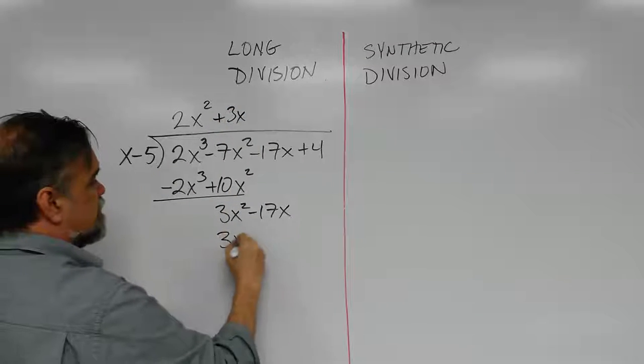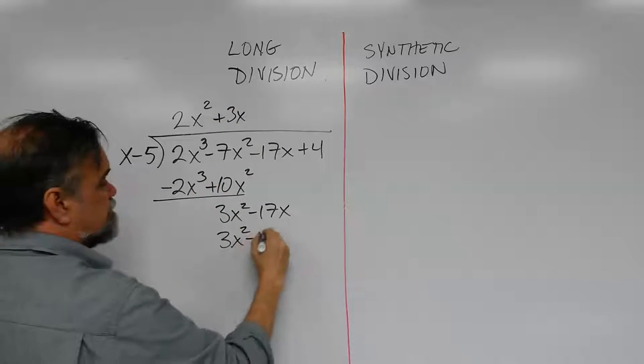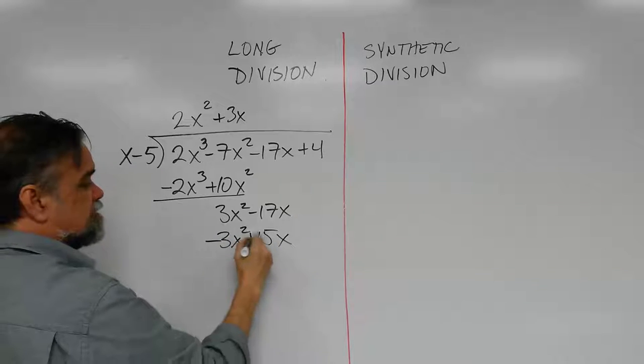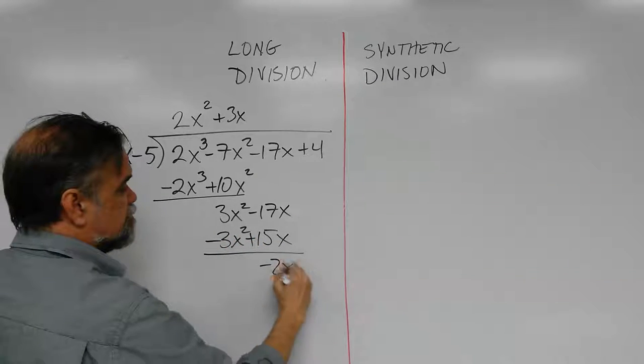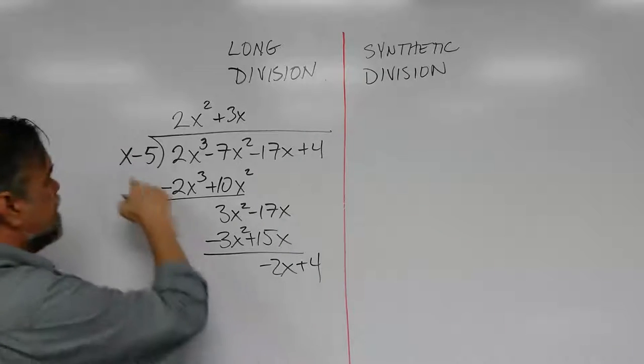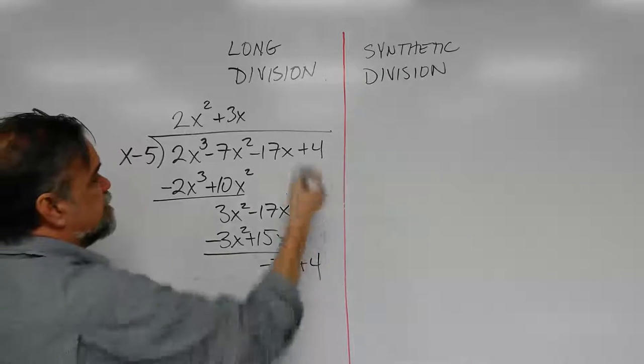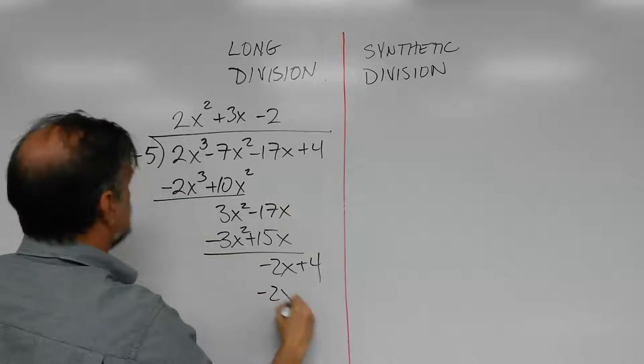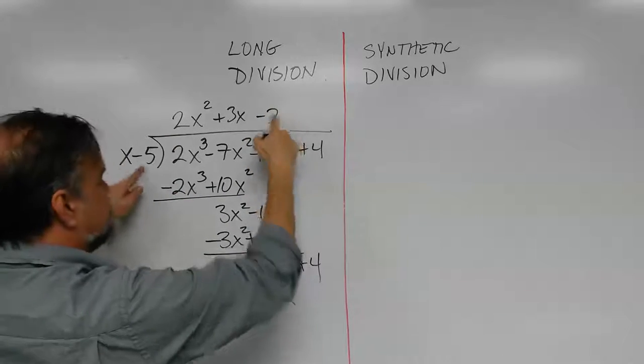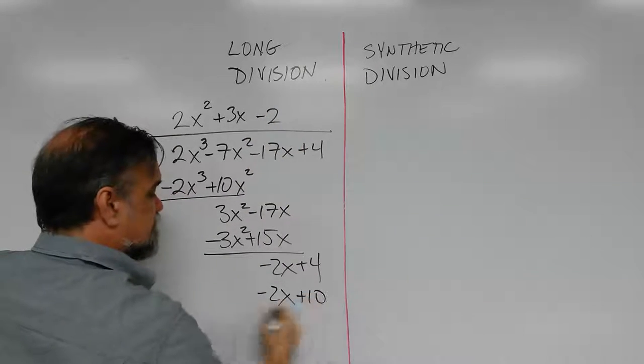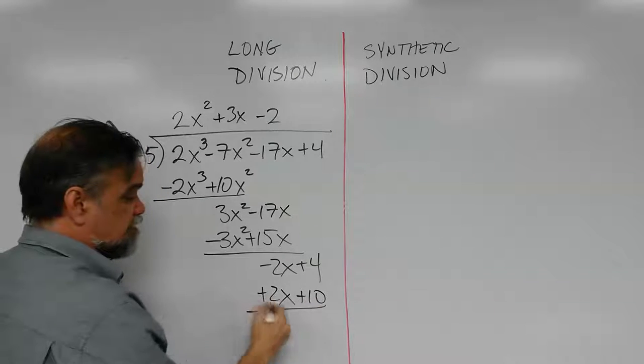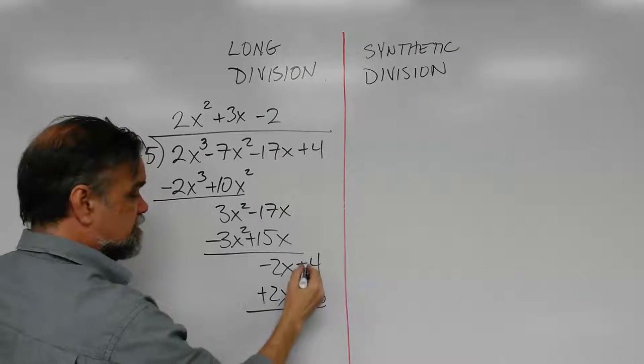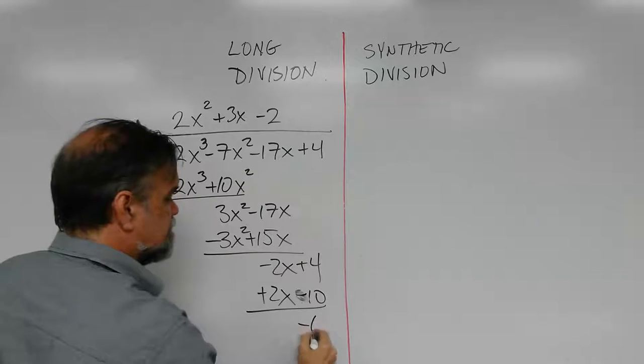So we get 3x squared minus 15x. Change the sign. Minus 2x. Drop down the plus 4. And x goes into negative 2x how many times? Negative 2 times. And then we get negative 2x. Negative 2 times negative 5 is positive 10, but then we're going to change the signs again. And so I get 4 minus 10, which is negative 6.